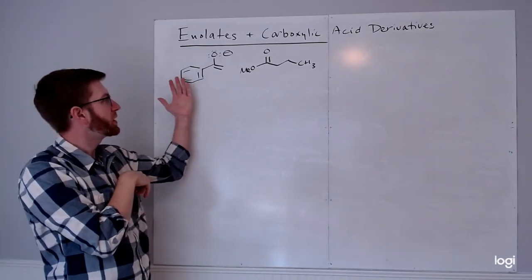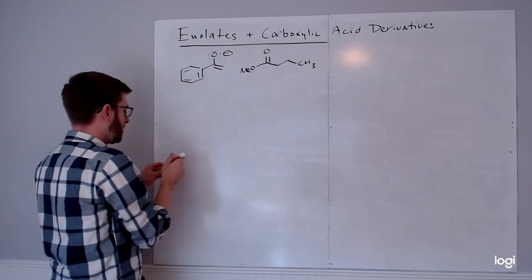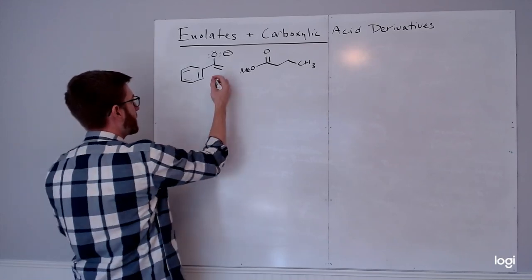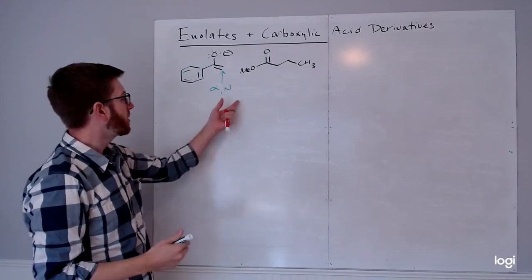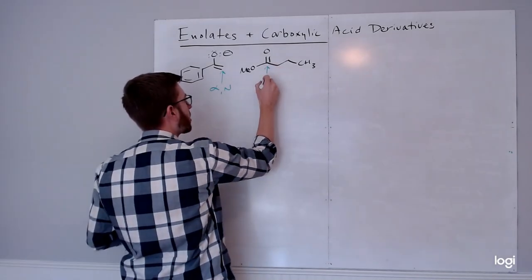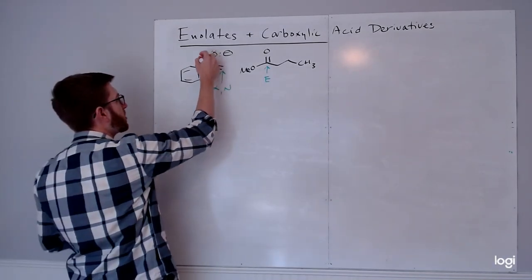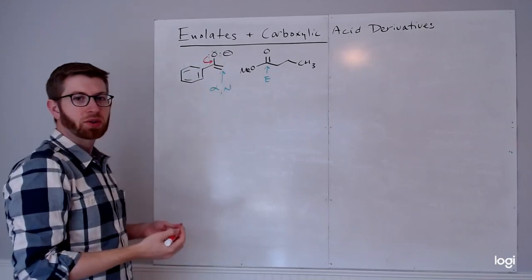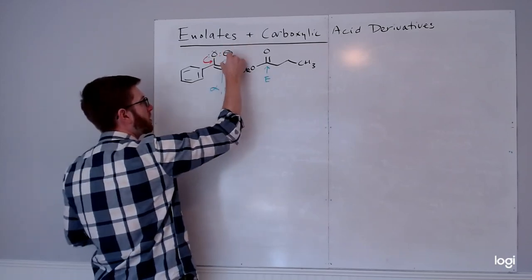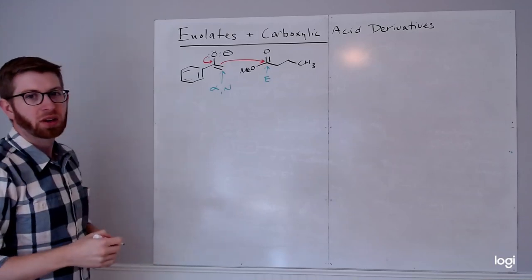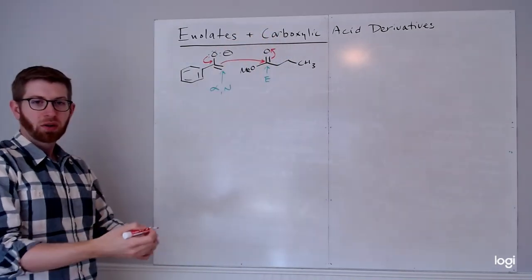We need to think about what would happen if the enolate encountered this ester. Using roles, we know that this alpha carbon is nucleophilic - it's already been deprotonated, so we have a good nucleophilic site. And looking at the ester, the carbonyl is electrophilic. What is left is to connect those two. Drawing the major resonance structure where I have an O-minus, I'll show an arrow forward for reformation of the C-O pi bond. Electrons transfer into a new bond between the nucleophilic carbon and the electrophilic carbon, requiring breaking the C-O double bond of the electrophile.